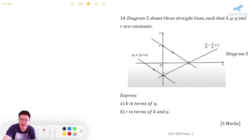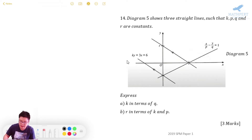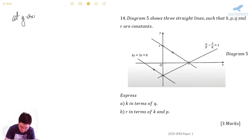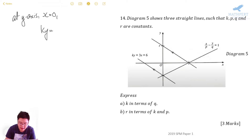These two straight lines intersect at a point that lies on the y-axis. On the y-axis, x is equal to zero. We substitute x = 0 into the first equation: ky = 3x + 6. With x = 0, 3x becomes zero, so y equals 6 over k. This is equation number one.